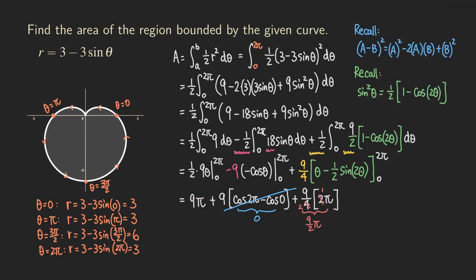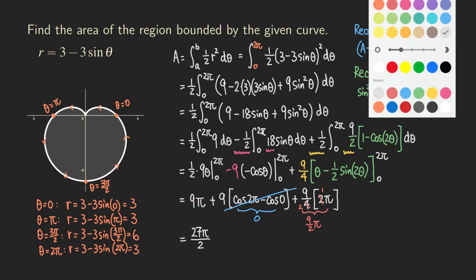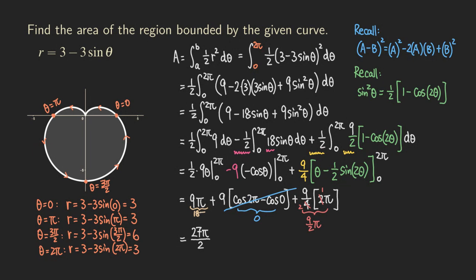Adding everything up: 9 over 4 times 2π simplifies by canceling the 2 to give 9π over 2. Adding 9π plus 9π/2: finding a common denominator gives 18π/2 plus 9π/2 equals 27π/2. So the final answer is 27π/2 — that is the area of the region bounded by the cardioid.